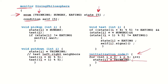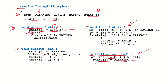Whenever a philosopher wants to eat they invoke the pickup function, which is defined within the monitor construct. The pickup function takes i, referring to the philosopher number. Philosopher i will first set its state to hungry, since the philosopher wants to eat. Before picking up the chopsticks, it must make sure both neighbors are not eating - that is, the left and right neighbors are not eating. To check that, it invokes the test function.